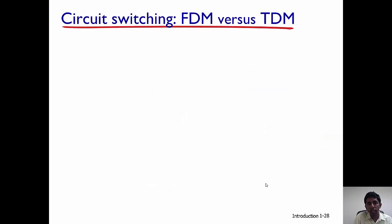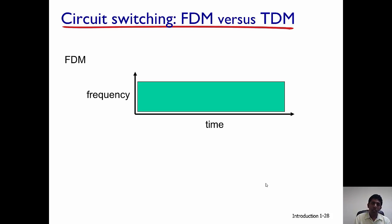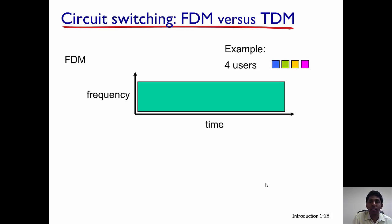Let's look at how circuit switching is implemented. The two ways are frequency division multiplexing (FDM) and time division multiplexing (TDM). In frequency division multiplexing, the entire frequency is divided into multiple bands and each of those bands is allocated to a different user.